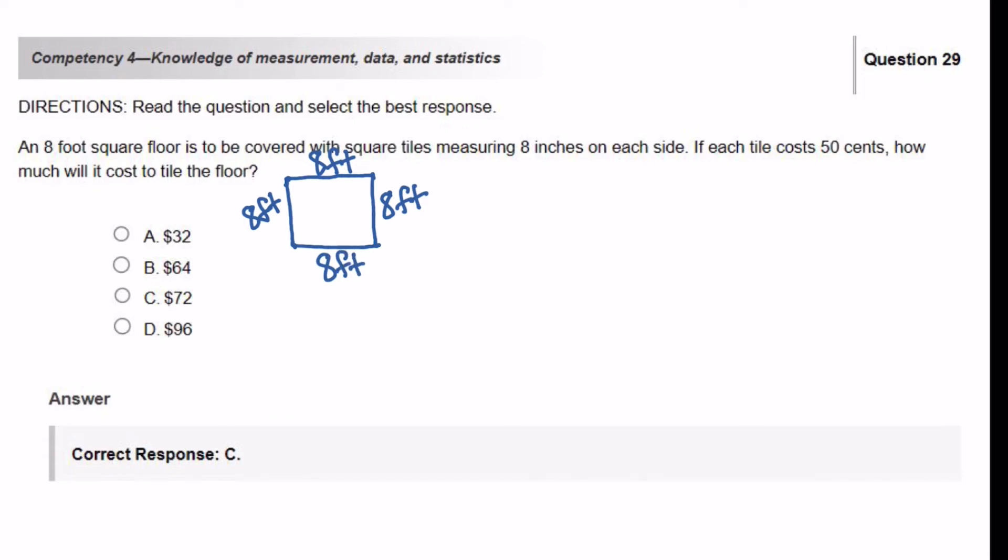And then it says that this particular floor is going to be covered. This is the indication that you're going to be looking for the area of a shape. And what is it going to be covered with? It's going to be covered with tiles, and each one of those tiles are 8 inches on each side. So the tile is going to be just a little small tile. And because it's in the shape of a square as well, because it says it's a square tile, each side of the tile is also, in this case, 8 inches. So I'm going to label that as well.